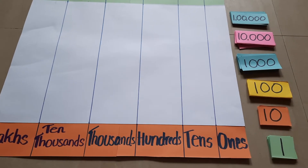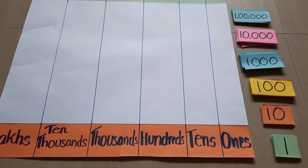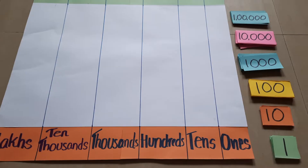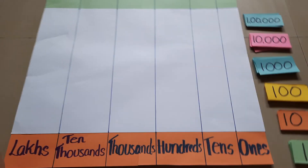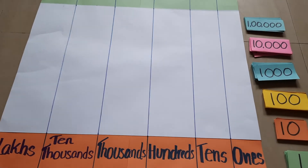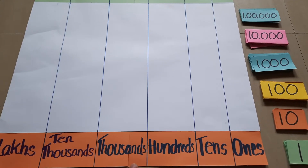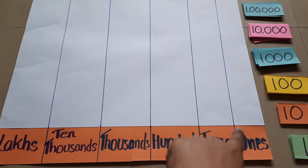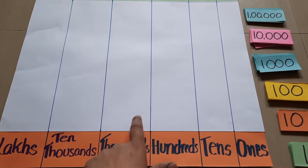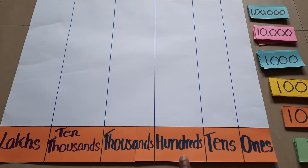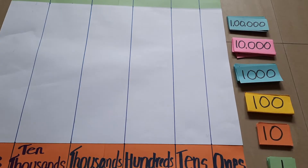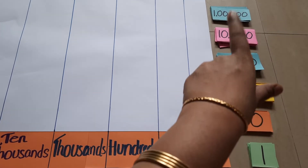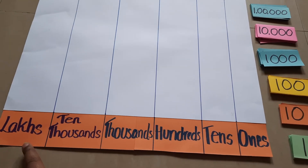Hi everyone, welcome to your maths class. Today I am going to share three activities with you related to number system and place value. For place value, this is one activity which I had done in my online class and children have loved it. You will require an A3 size sheet where I have written the places, and I have these flash cards — ones, tens, hundreds, thousands, ten thousand, and one lakh.